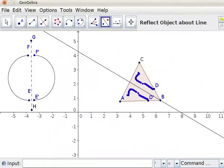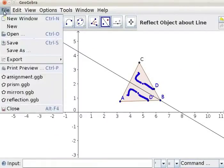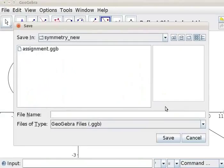Let us save this file now. Click on File. Save As. I will type the file name as Line-Symmetry. Click on Save.